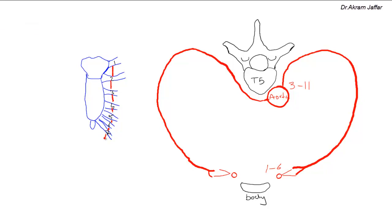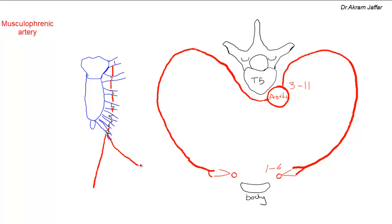One terminal branch descends straight down into the abdomen — this is the superior epigastric artery. The other passes along the costal margin and is called the musculophrenic artery. This musculophrenic artery takes over the supply of the anterior intercostal arteries in the lower intercostal spaces, since the internal thoracic artery terminates at the level of the sixth intercostal space. So it is the musculophrenic artery that supplies the anterior intercostal arteries of space seven and below.